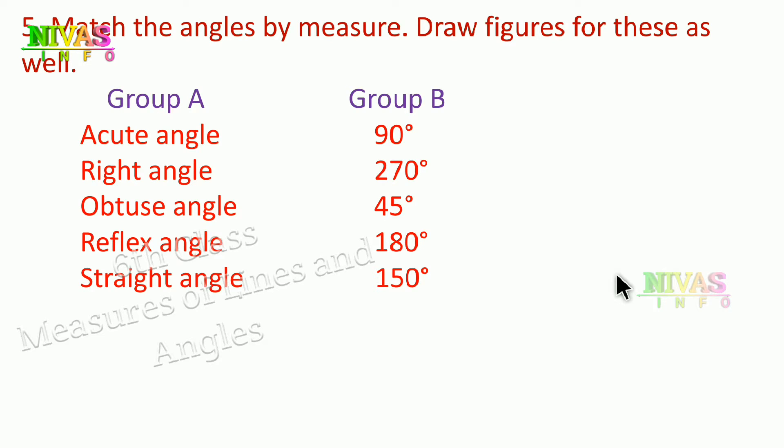Next question: match the angles by their measure and draw a figure for each. We have Group A angle names to match with Group B angle measures. Group B has values — right angle corresponds to 90 degrees.